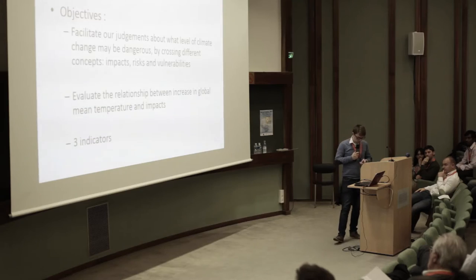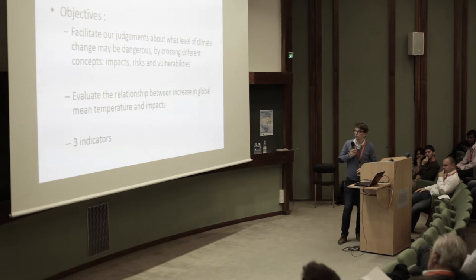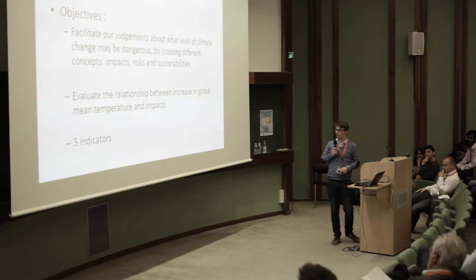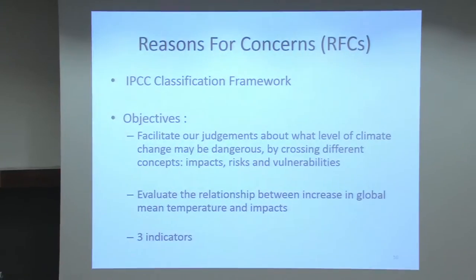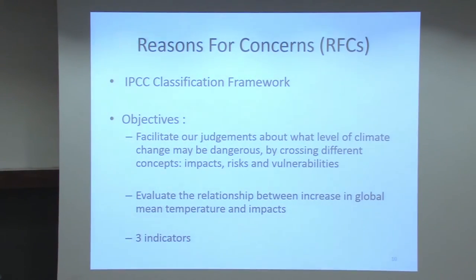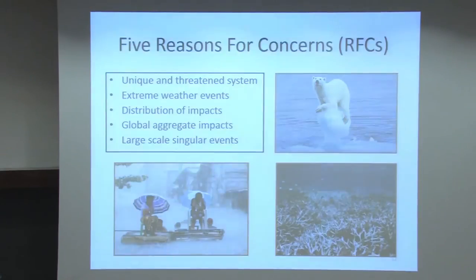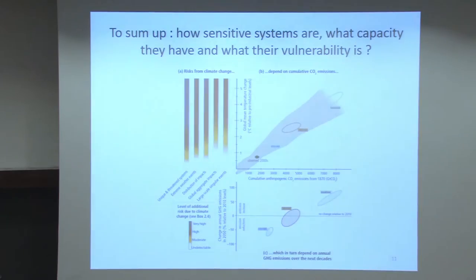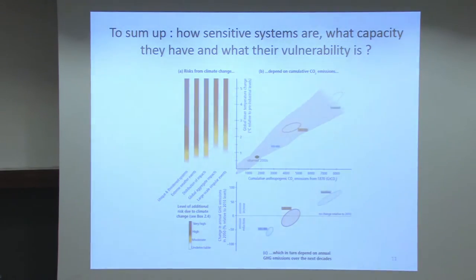Another purpose is to evaluate the relationship between the impact from climate change and the increase in global mean temperature — which is one indicator — plus two more indicators. We can focus on the graph. You can see there is a color scale. There are five Reasons for Concern. Thanks to the color scale, you can read the level of additional risk due to climate change, from undetectable to very high.